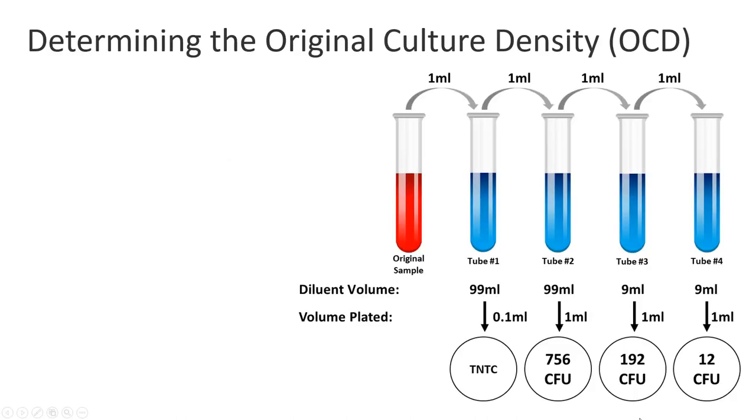Here's an example where we have a serial dilution. Aliquots from each of those tubes have been plated onto four different plates. Those plates have then been incubated, and the colonies that grew after incubation have been counted.